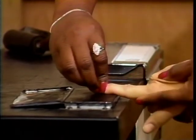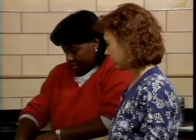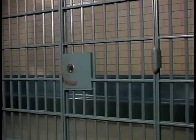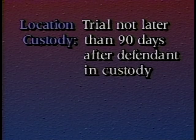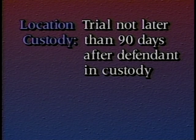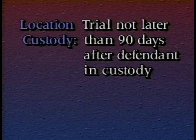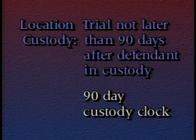Location custody is the time period during which the defendant is in continuous custody solely for the purpose of awaiting trial. The Speedy Trial Act establishes a 90-day limit for this interval — the trial of a defendant held in continuous custody solely to await trial on federal charges must start not later than 90 days following the defendant's placement in custody. If the trial doesn't start by then, the defendant may be released. Because of this limit, location custody is also referred to as the 90-day custody clock.